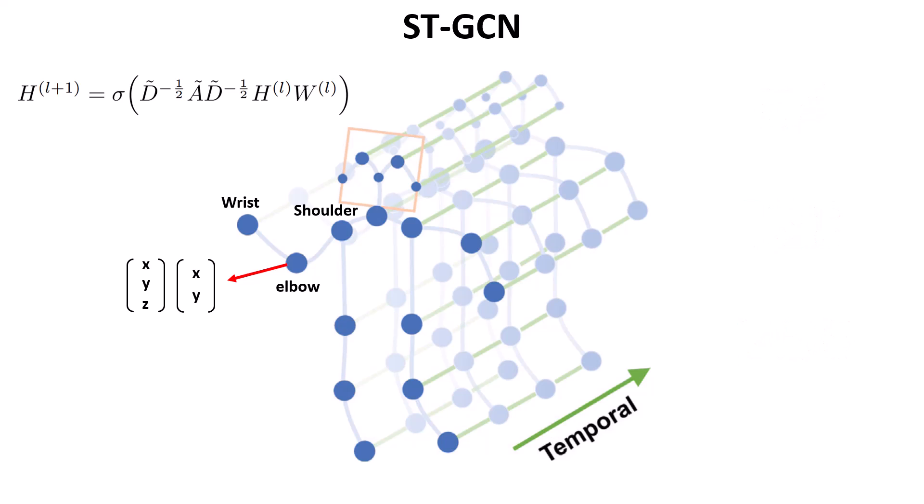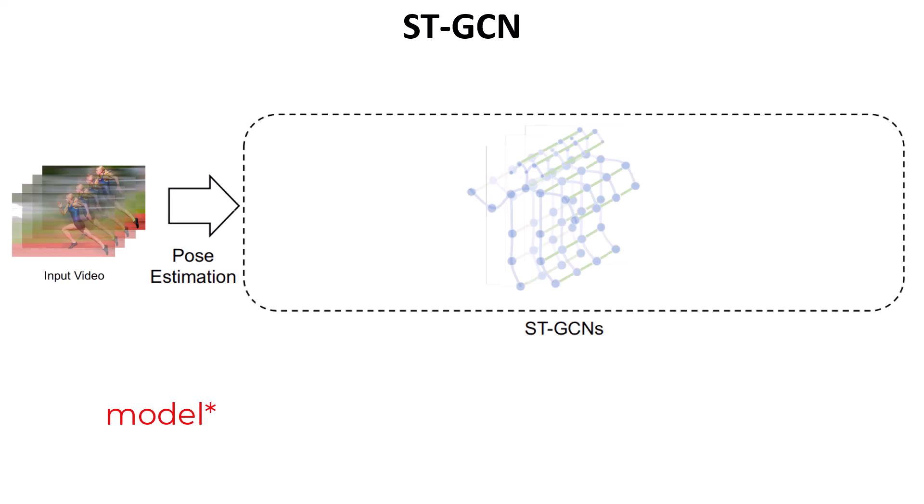What is the network they are using? As shown in the paper, originally we have some input video, and then a pose estimation algorithm is used to predict 2D or 3D skeleton sequences from those videos.